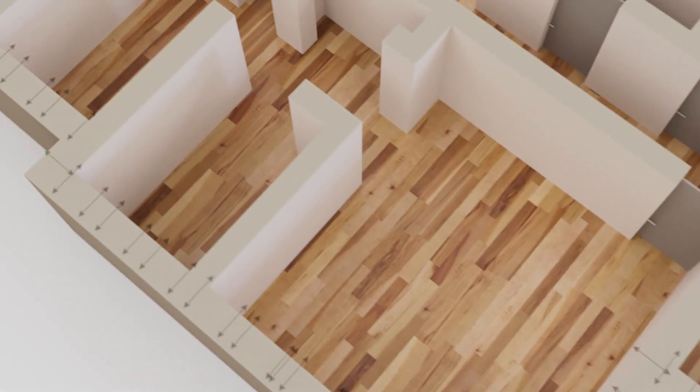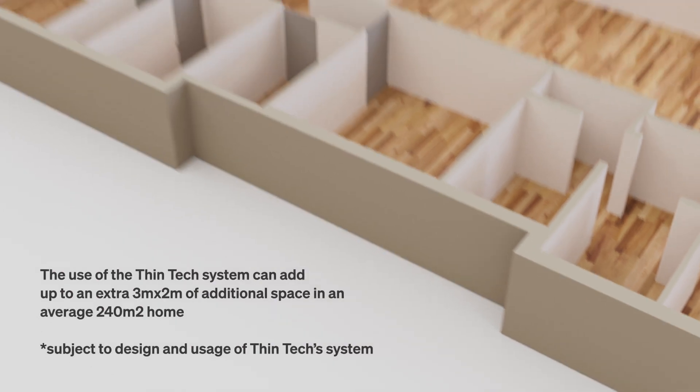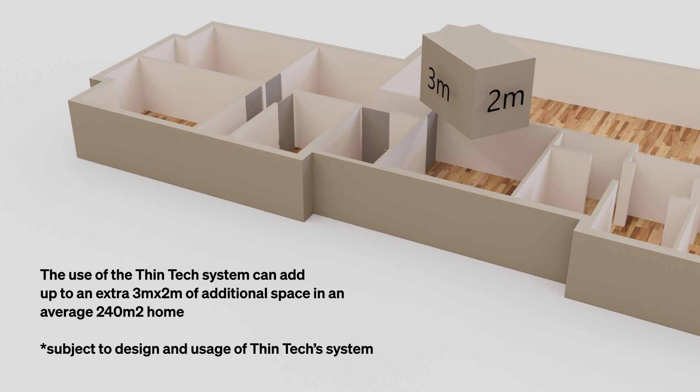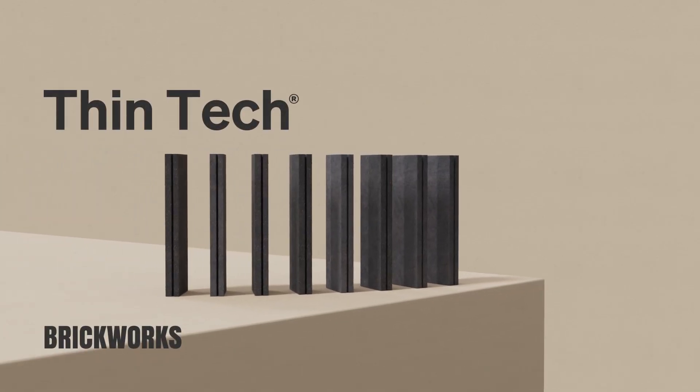The use of the ThinTech system can add up to an extra three by two metres of additional space in an average 240 square metre home, subject to design and usage of the ThinTech system.